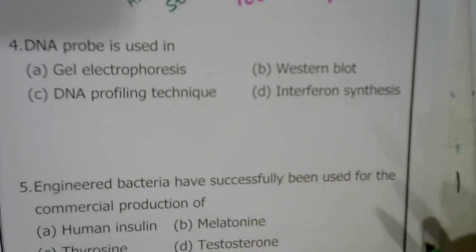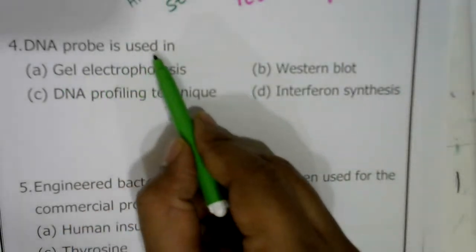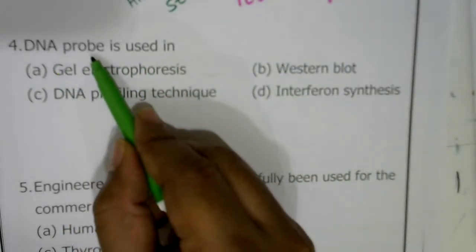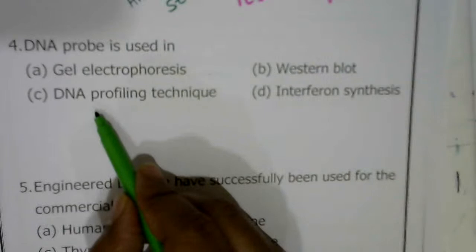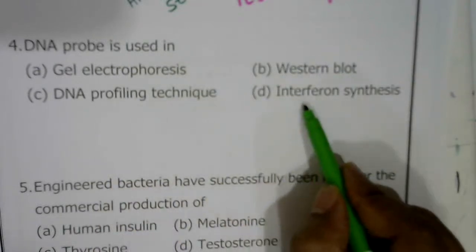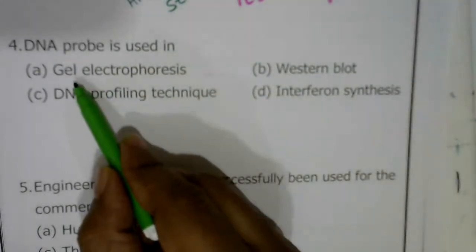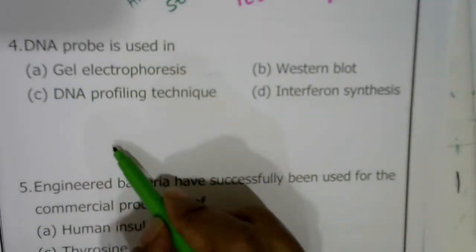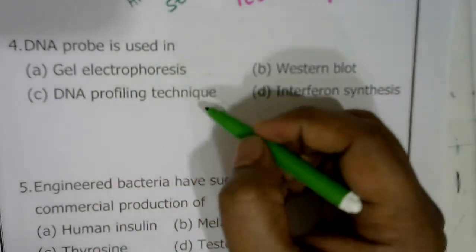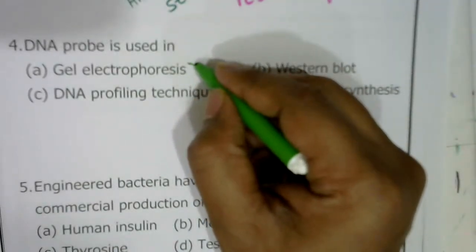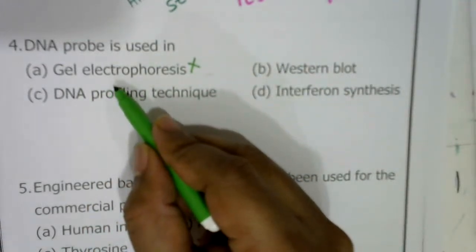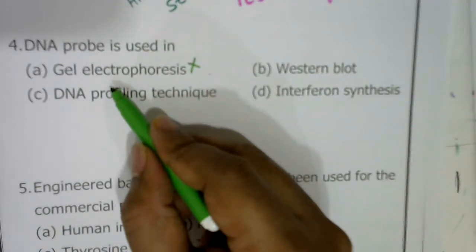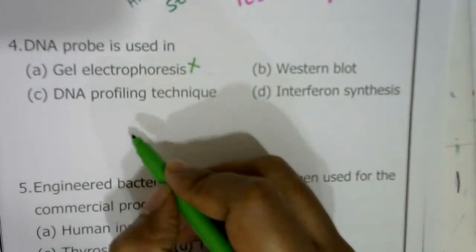Question four: where is a DNA probe used? The options are gel electrophoresis, western blot, DNA profiling technique, or interferon synthesis. In gel electrophoresis, DNA fragments are separated on agarose gel using an electrical field, so it is not gel electrophoresis. Western blot is for separation of proteins, so answer cannot be B either.